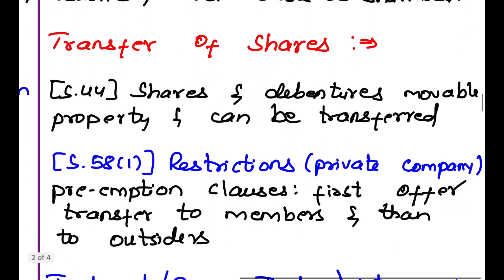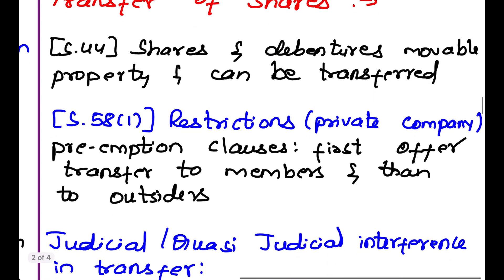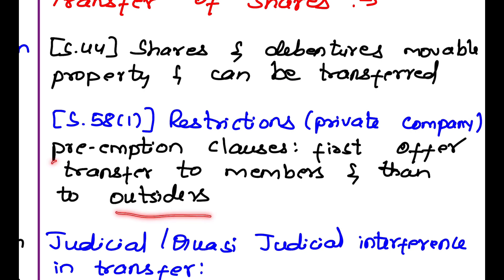The next concept is transfer of shares. Under Section 44, shares and debentures are movable property and can be transferred. Restrictions on the transfer of shares include the preemption clause. The first offer to sell shares should always be made to the other members of the company. Only after other members refuse to buy the share should it be sold to outsiders. This is called the preemption clause.